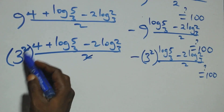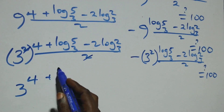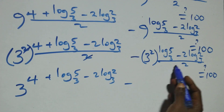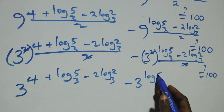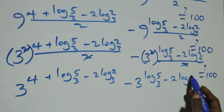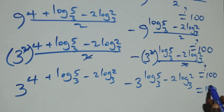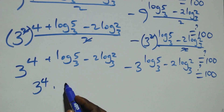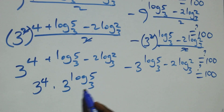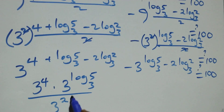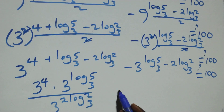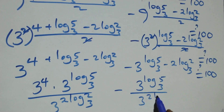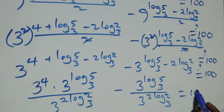This follows the law of indices. What we have becomes: 3 squared raised to power (4 plus log 5 base 3 minus 2 log 2 base 3, all over 2), minus 3 squared raised to power (log 5 base 3 minus 2 log 2 base 3, all over 2), equals to 100. The 2 in the base multiplies the exponent, cancelling the denominator 2, giving us 3 raised to power (4 plus log 5 base 3 minus 2 log 2 base 3) minus 3 raised to power (log 5 base 3 minus 2 log 2 base 3) equals to 100.